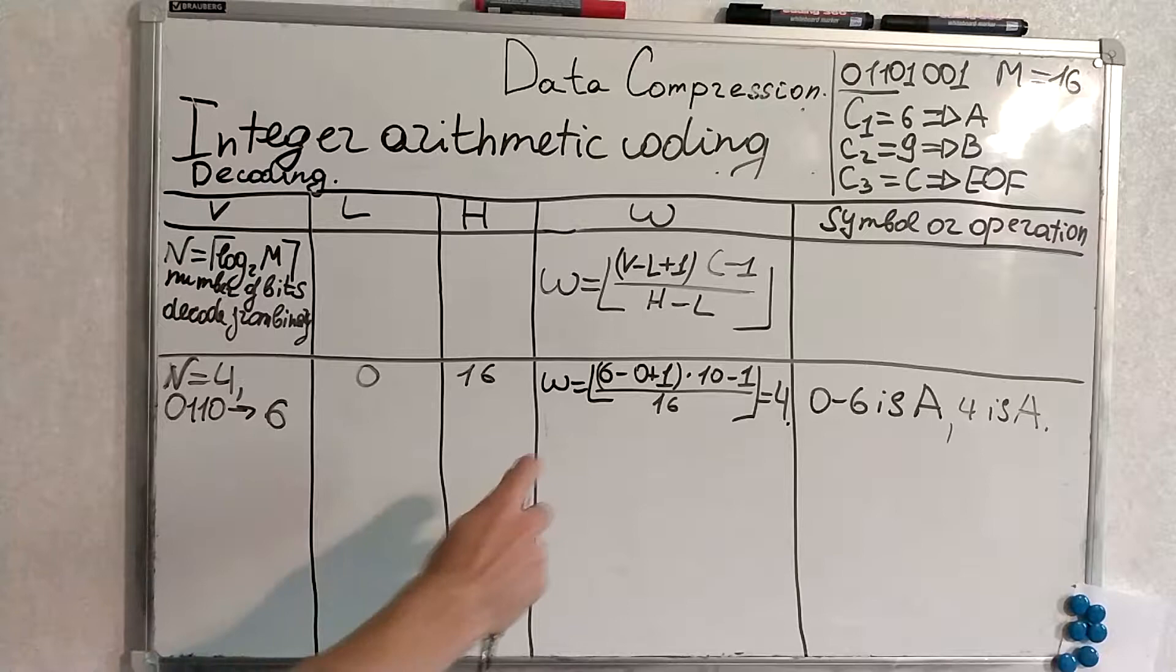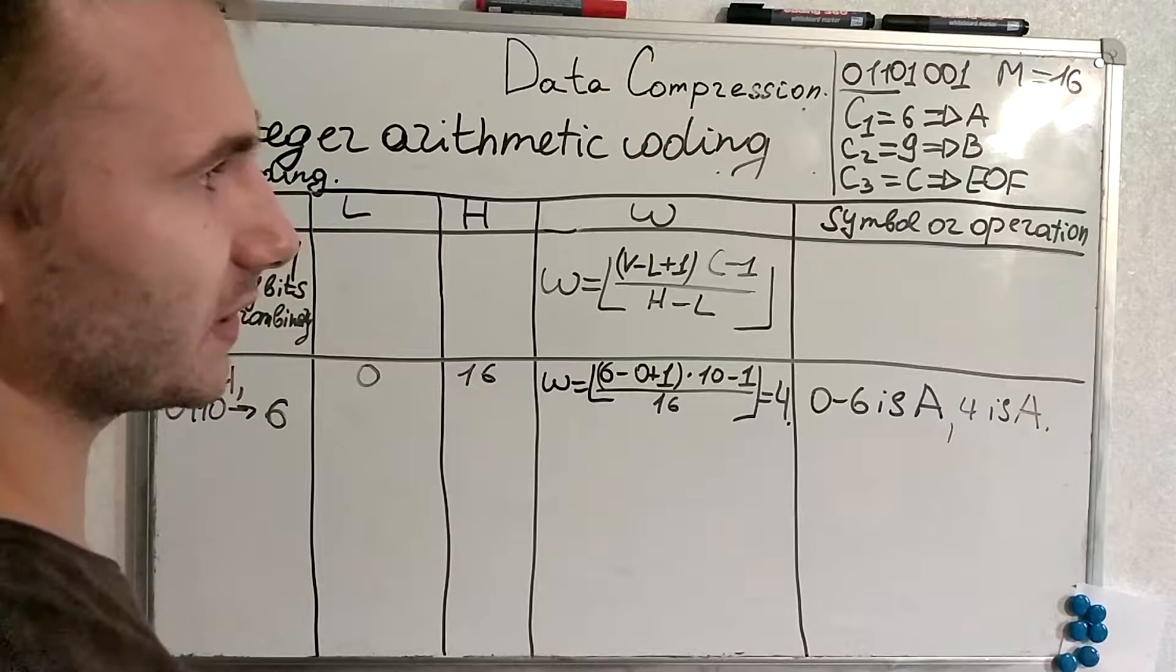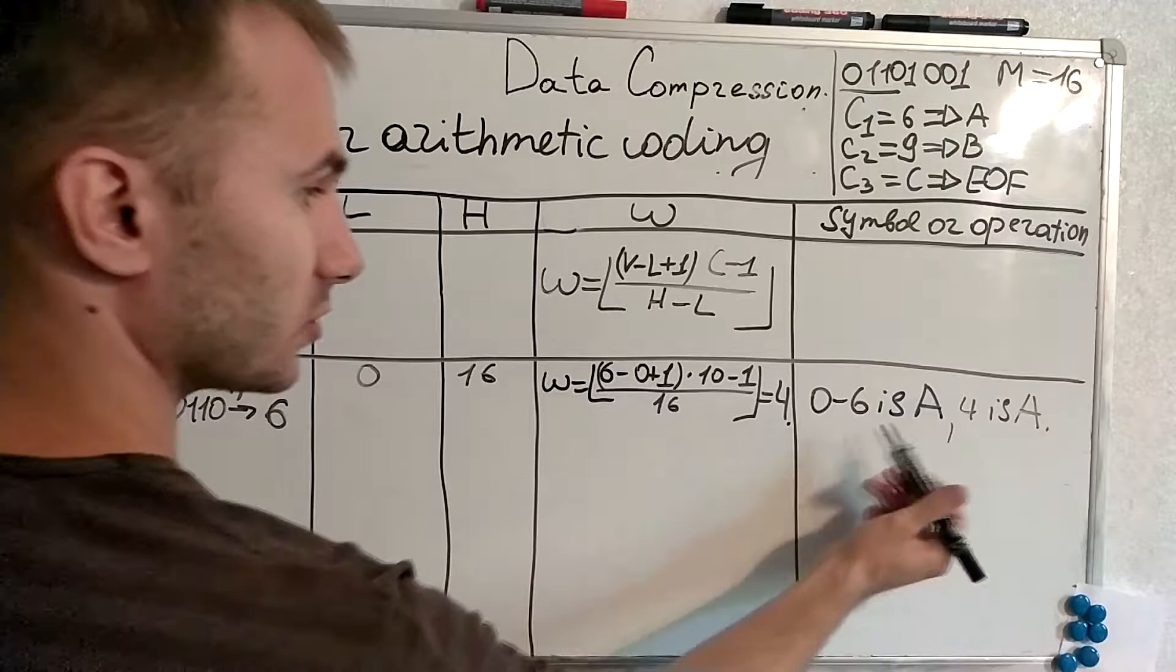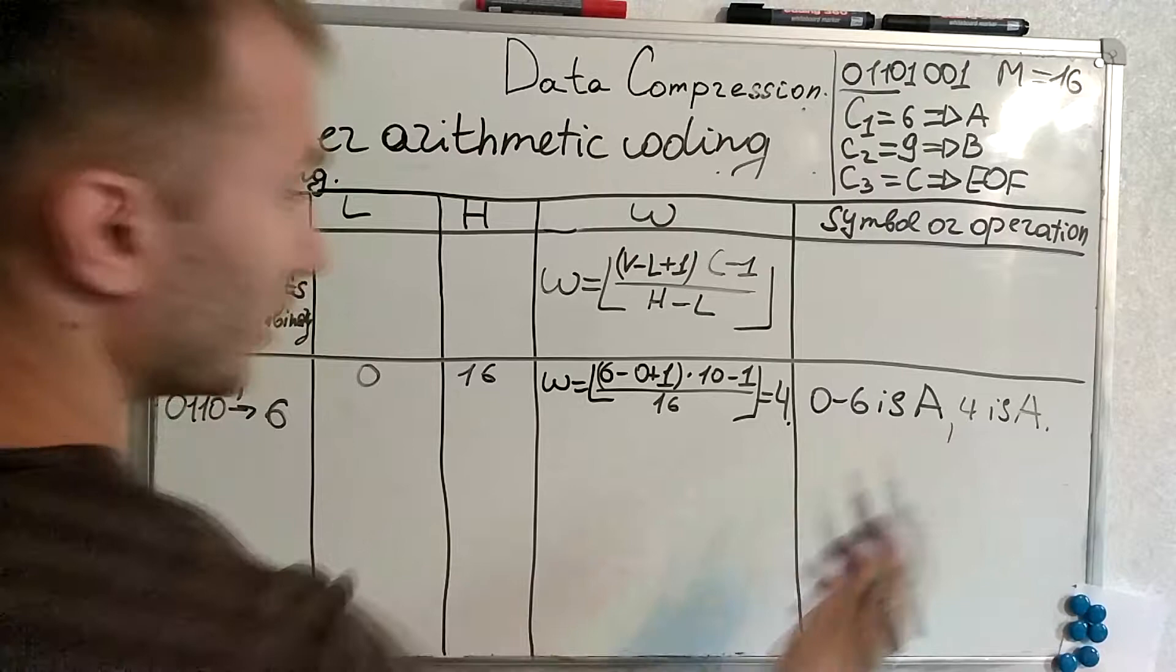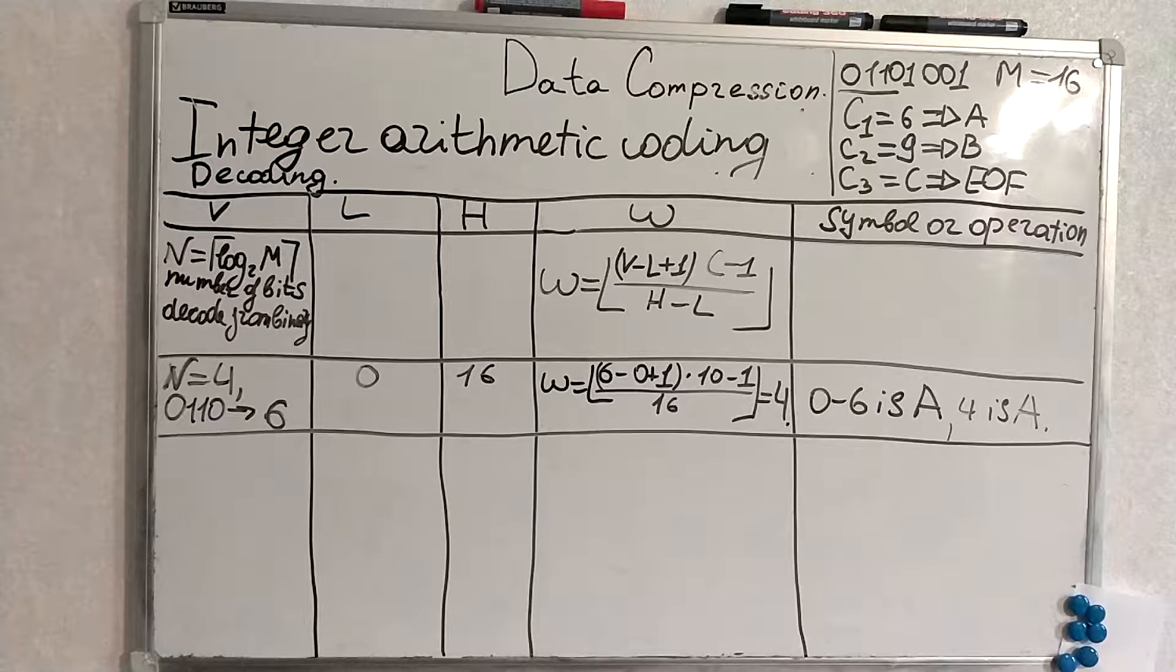From here we decode binary representation we decode binary representation of this number this is 6 right we plug in everything here and produce 4 then we look at this 4 and look in which specific place in the given interval this point corresponds to. It corresponds to letter a because we are inside the interval from 0 to 6. 4 is inside this interval thus our symbol is a. To update l and h we will use the same formulas as from the encoding scheme. I think you can try to decode it yourself.